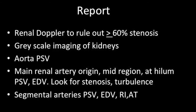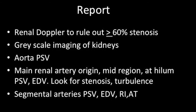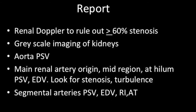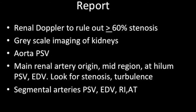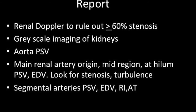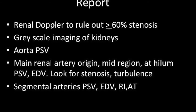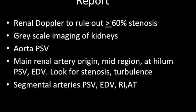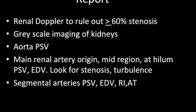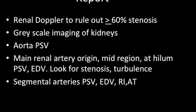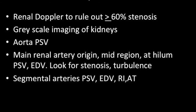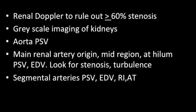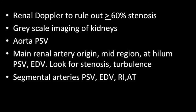In the report, the first line should always state that renal Doppler was done to rule out more than or equal to 60% stenosis. Grayscale imaging of the kidneys should always be included. The aorta PSV should be given. For the main renal artery, origin, mid region, and hilum PSV and EDV are recorded. Look for stenosis and turbulence on color Doppler. For segmental arteries, PSV, EDV, RI, and acceleration time are mentioned, along with whether flow is reaching the periphery in both kidneys.